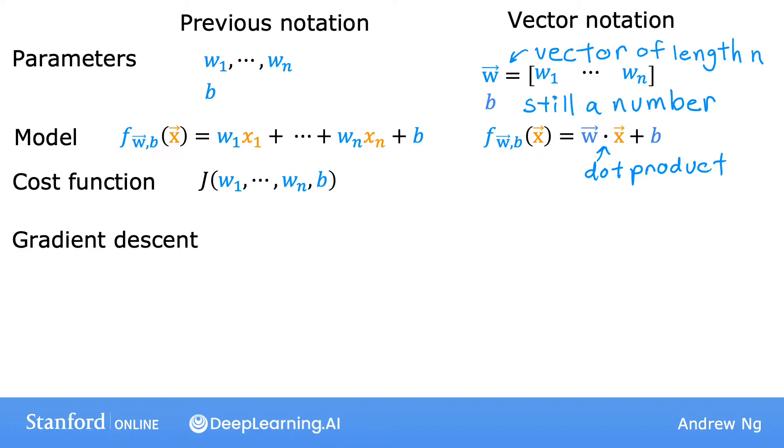we're going to write J as a function of parameter vector w and the number b. So this w1 through wn is replaced by this vector w. And J now takes as input a vector w and the number b and returns a number.